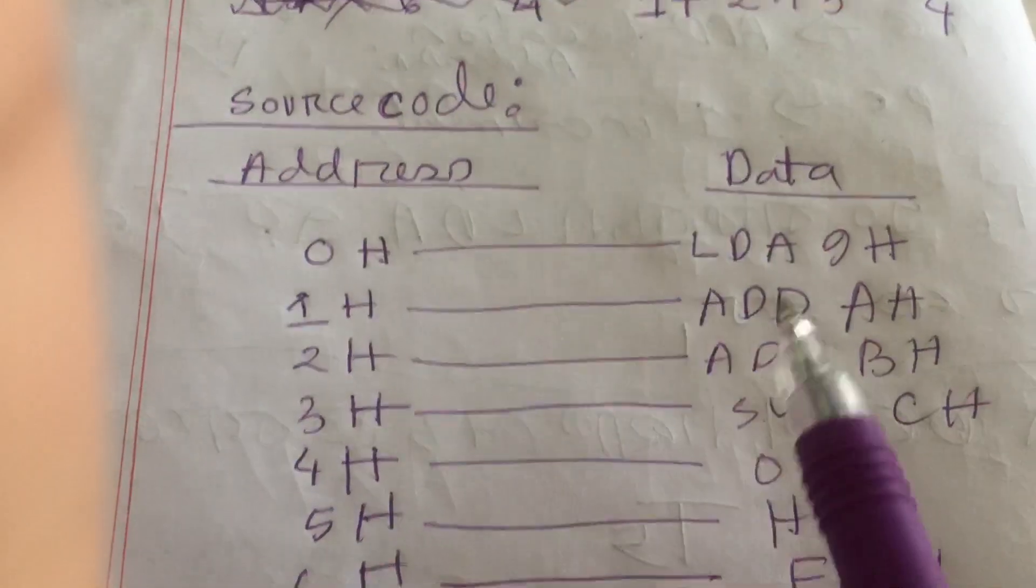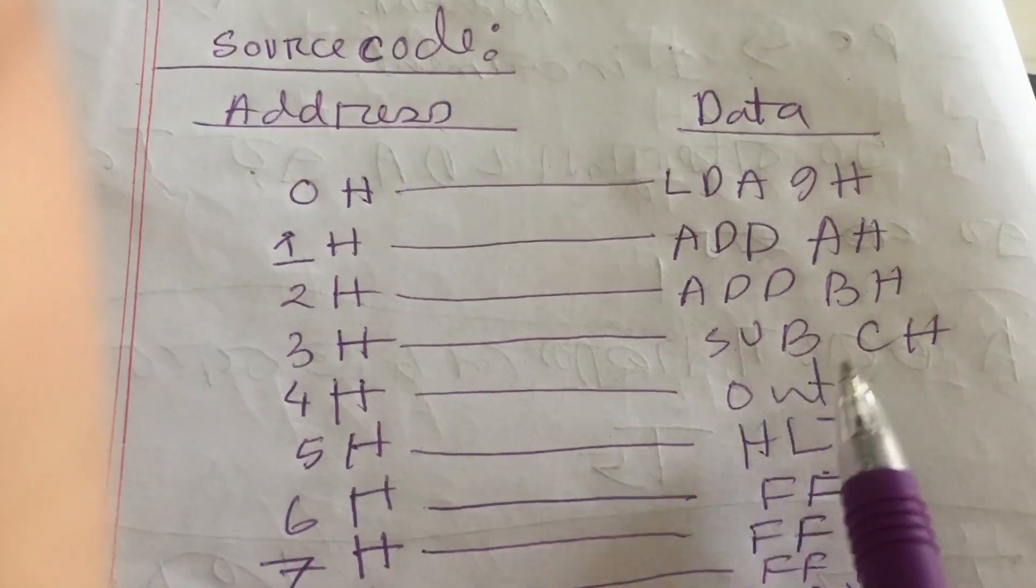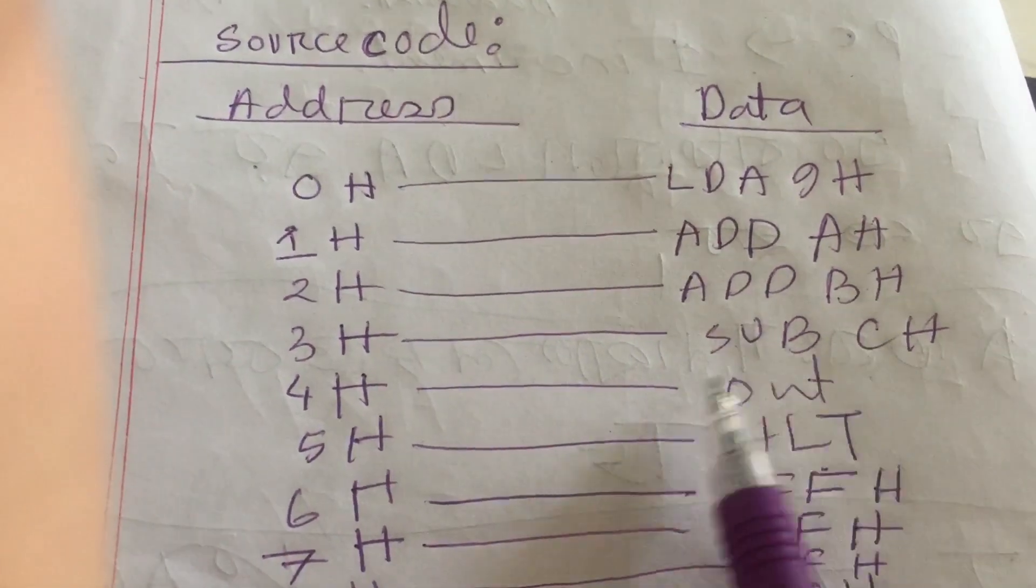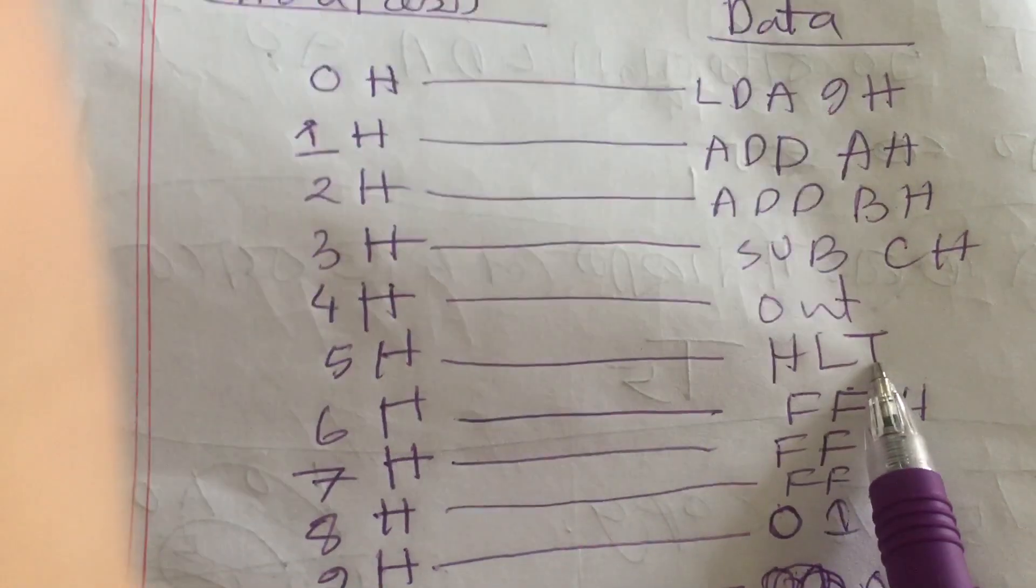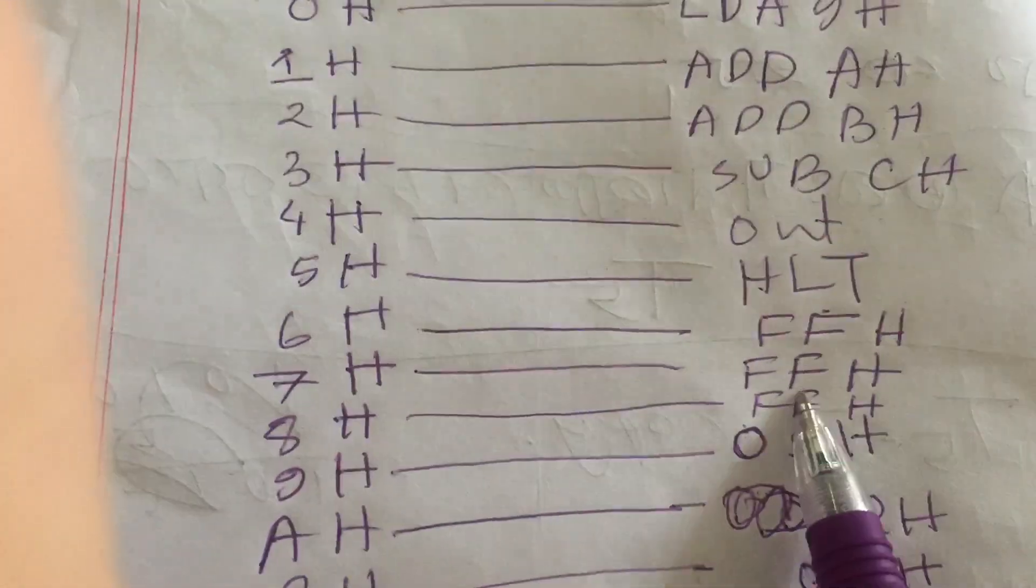So load, add, add, add, and subtraction. And after finishing the code, we have to write OUT then HLT. And rest of the blank spaces will be filled up by FFH. So this is the source code.